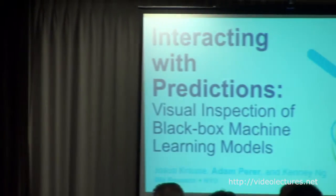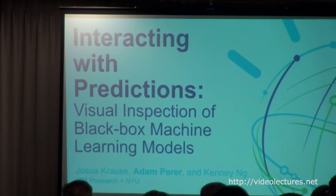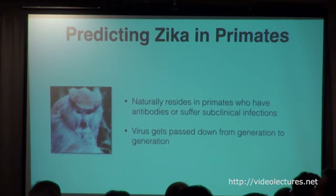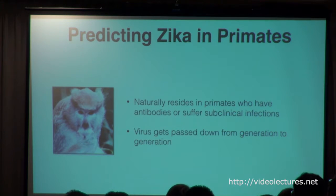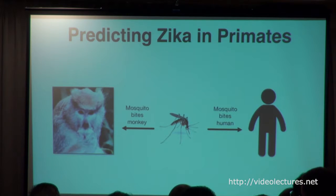To make this a little bit more concrete, I'm going to talk about a project that we're applying predictions to that's very fresh. We're working with some ecologists at the Cary Institute in New York that are trying to actually predict Zika virus in primates. That's how Zika spreads to us — monkeys have it first. It doesn't really affect them, so they continue to survive and pass it on generation to generation. Then mosquitoes bite the primates, then the same mosquitoes bite us, and then we get Zika.